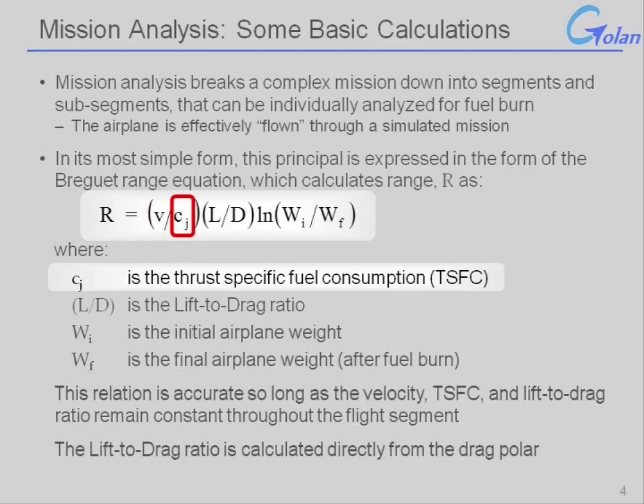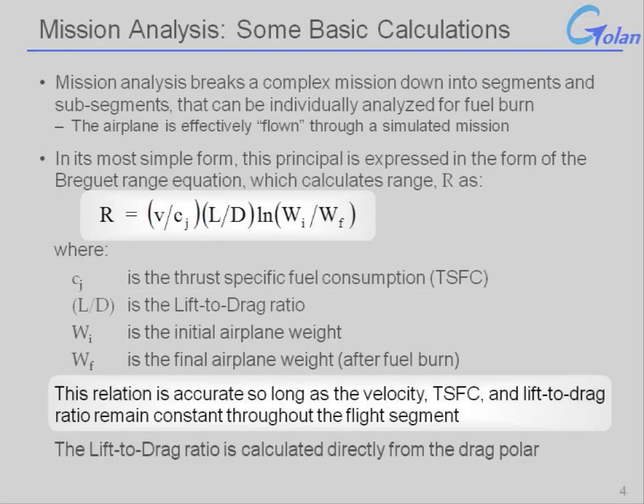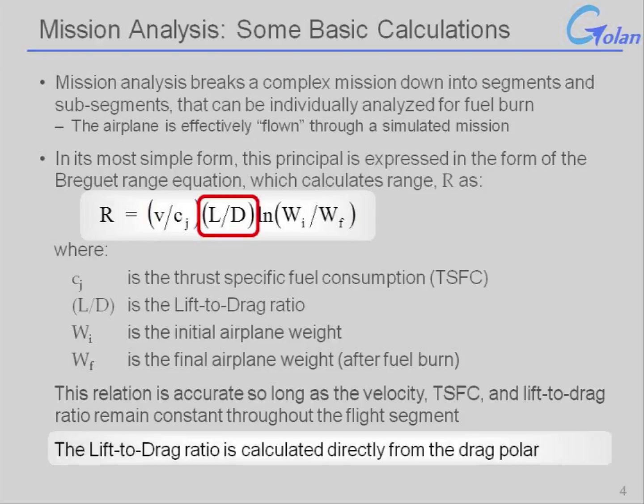We can see that the range is also related to the lift-to-drag ratio. And buried in that lift-to-drag ratio is the drag polar for the aircraft. This relationship, the Breguet range equation, is going to be accurate for so long as the velocity, the fuel consumption, and the lift-to-drag ratio remain constant throughout this flight segment, which is somewhat of an approximation. And as mentioned before, the lift-to-drag ratio itself is closely related to the drag polar.